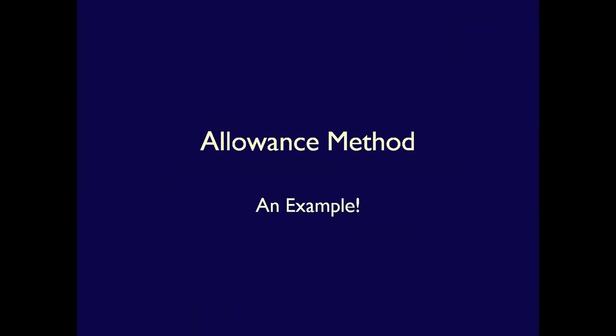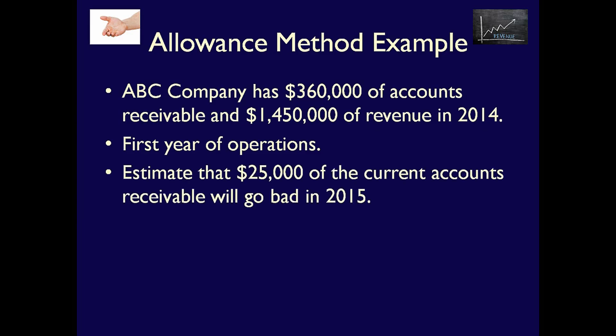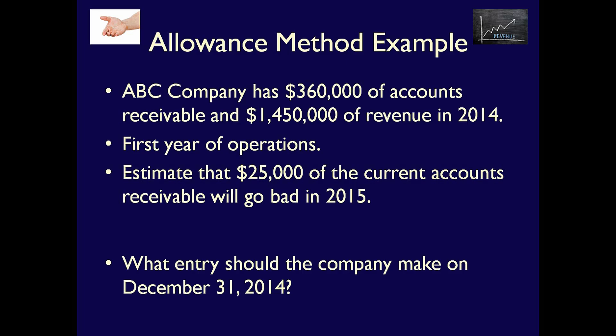Let's look at an example on how this is done. ABC Company has accounts receivable of $360,000 at December 31, 2014, and revenues of $1,450,000. Remember that this is the first year of operations for the company. Although management does not have much experience, they use what's happening in their industry and the economy to estimate that $25,000 of the current accounts receivable of $360,000 will not be collected in the upcoming year. What entry should the company make?